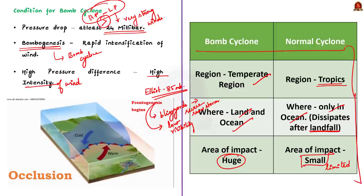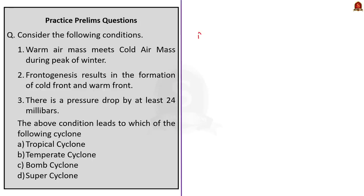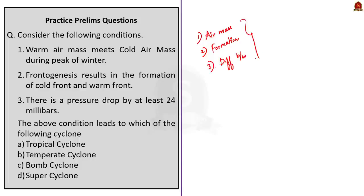With these points, we have come to the end of this particular news article discussion. In this discussion, we saw about air mass, how temperate cyclones are formed, the conditions needed for bomb cyclone, and finally the differences between bomb cyclones and normal cyclones. Now let us move on to the next news article.